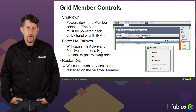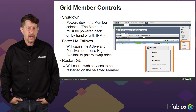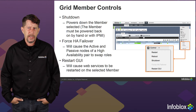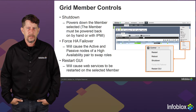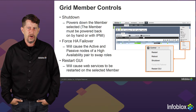Next we have Force HA Failover. This is only available when we have a high availability pair. In the screenshot shown, we have a single member, so notice it's grayed out. For a high availability pair, this would cause the active and passive nodes to swap roles. Finally, we have Restart the GUI, which causes the web services to be restarted on the selected member.